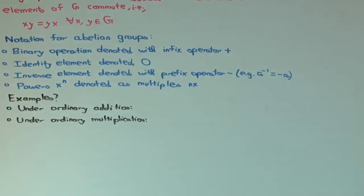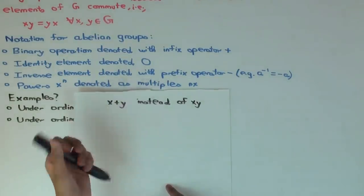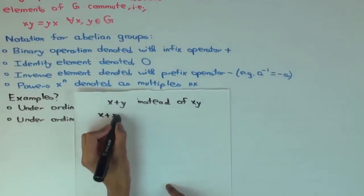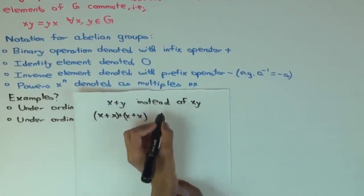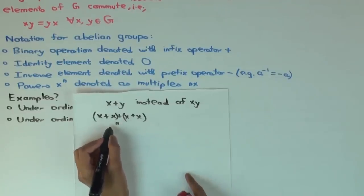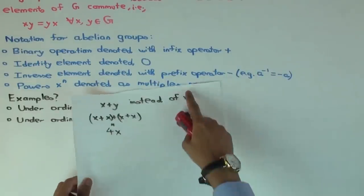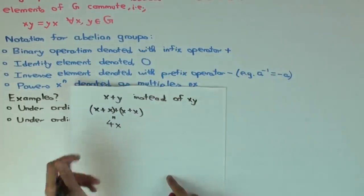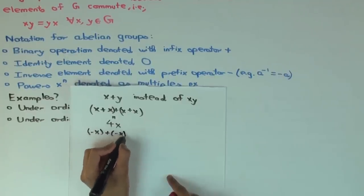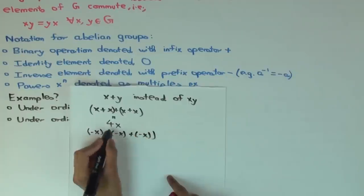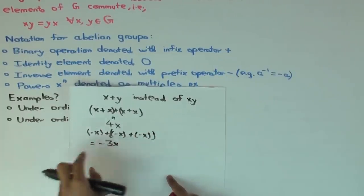And finally powers, x to the n, are denoted as multiples. So what this means is that let's say I have x plus x plus x plus x. How would I write that in short? 4x, right. So I put the number of times it occurred on the left. Suppose I have minus x plus minus x plus minus x. What does that become? Minus 3x.